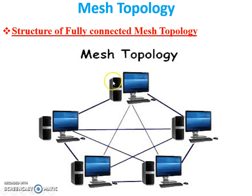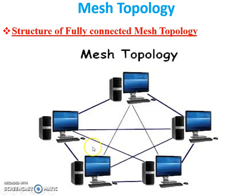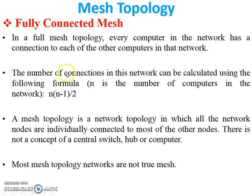In the structure of fully connected mesh topology, you can see all the PCs are connected with each other, so it is called fully connected mesh topology. In a full mesh topology, every computer in the network has a connection to each of the other computers in that network. As you can see here, all the PCs are connected with each other.